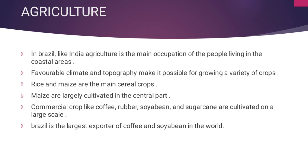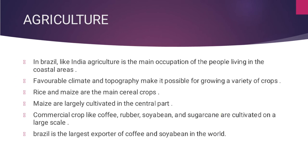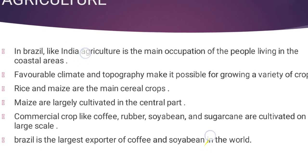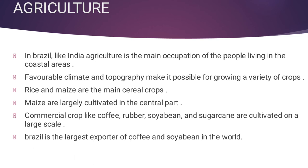For cultivating any crop, certain factors are very important: soil should be good, climate should be good, and topography — meaning landform — should also be good. Rice and maize are the main cereal crops, largely cultivated in the central parts of Brazil. Commercial crops like coffee, rubber, soybean, and sugarcane are cultivated on a large scale, generating high income.